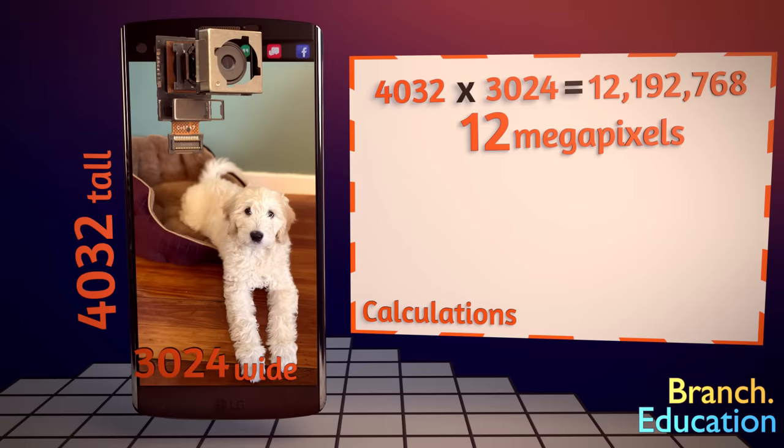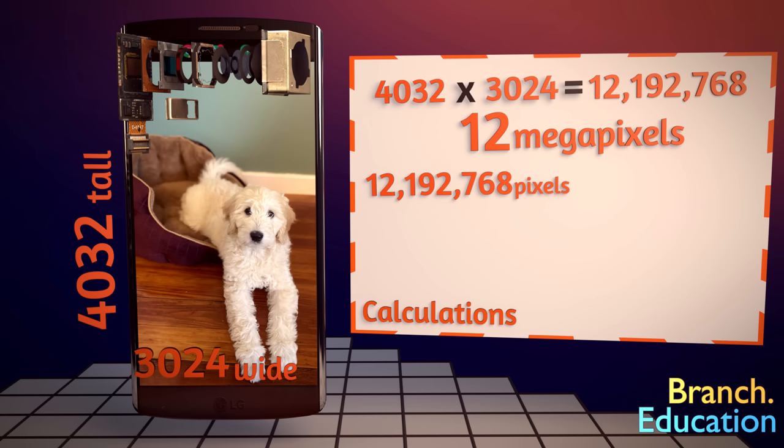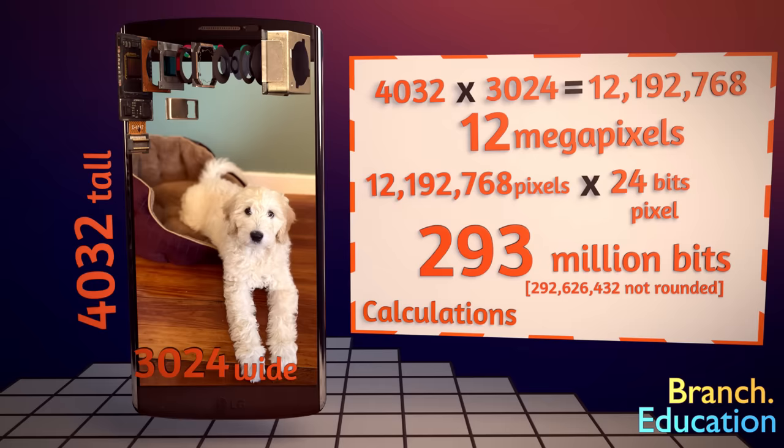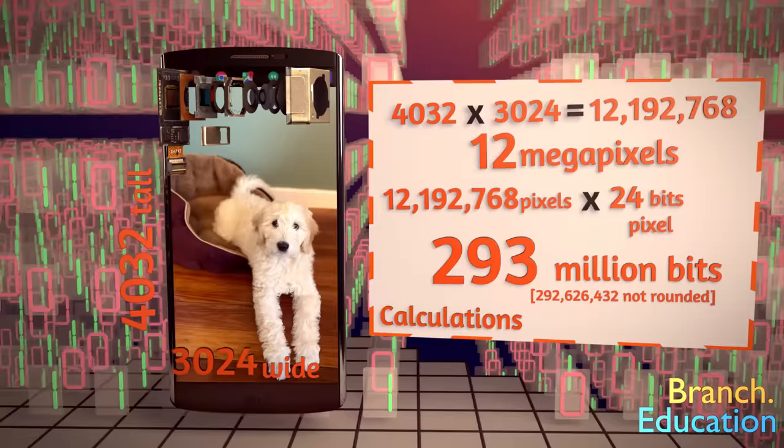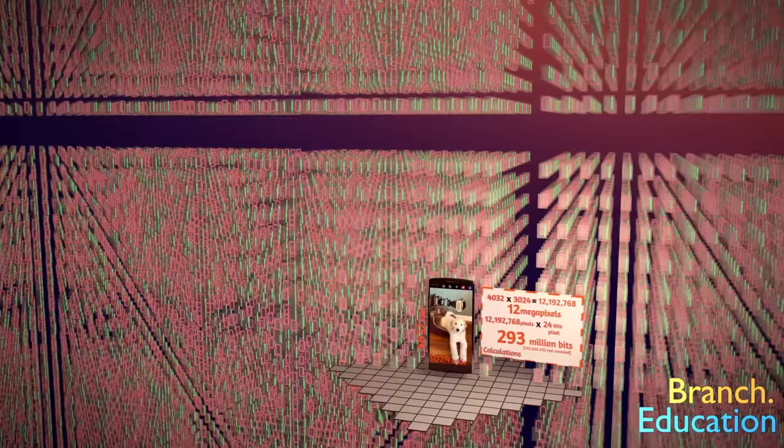Next, by doing some multiplication, we calculate that an array of this size, where each pixel is defined by 24 bits, or 24 zeros or ones, only requires 293 million bits, or a unique set of 293 million zeros or ones. That's a ton of bits. So, let's figure out how your smartphone, or the solid-state drive, seamlessly stores every single one of them.